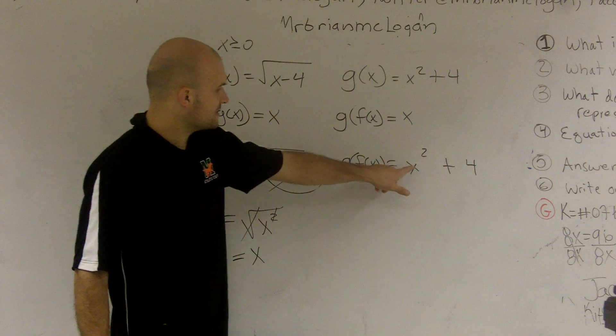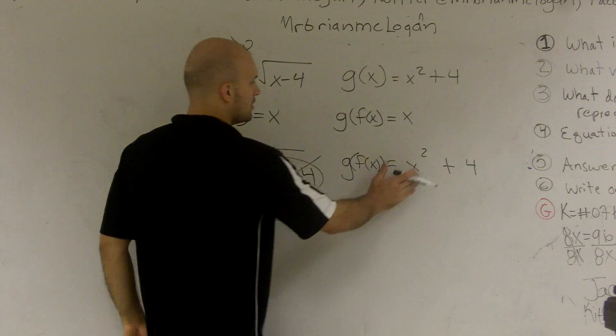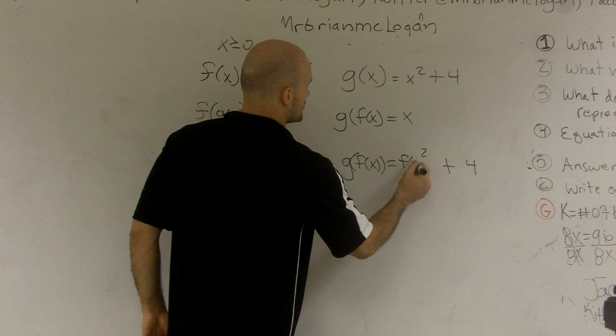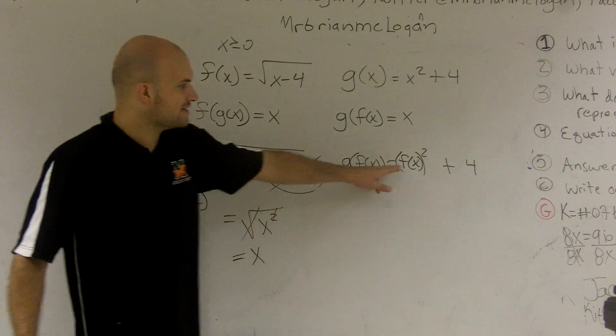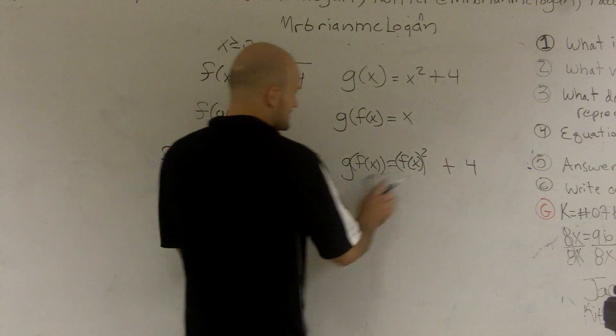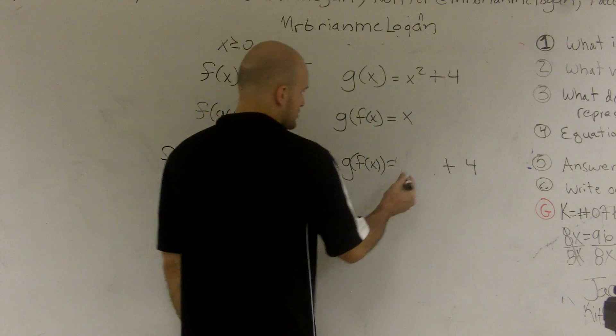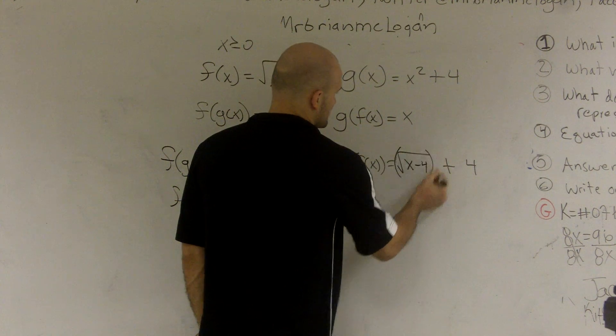Well, now, instead of using x, we're going to plug in f of x. But what does f of x equal? f of x equals the square root of x minus 4. So that's actually what I'm going to plug in. I'm going to plug in the square root of x minus 4, and I'm going to square it.